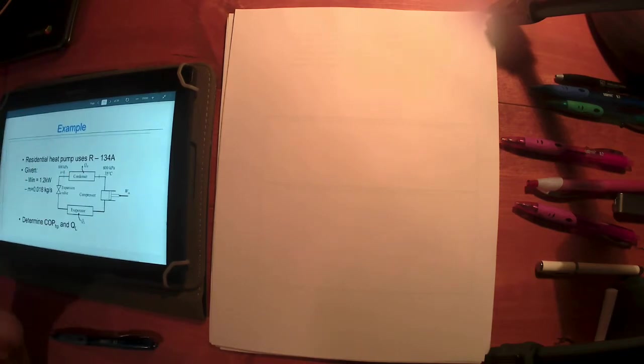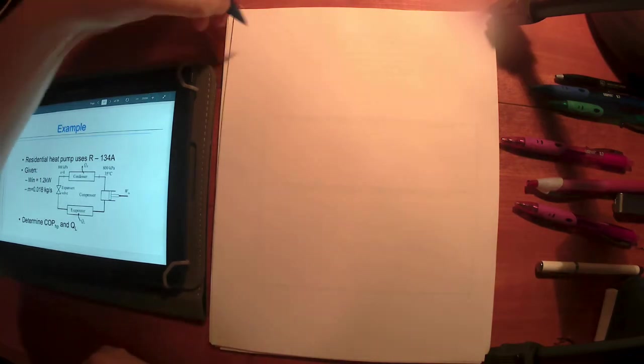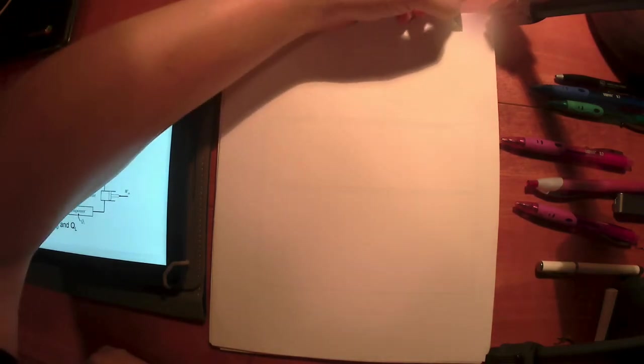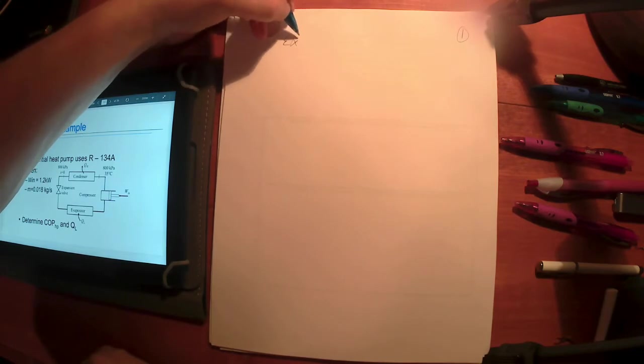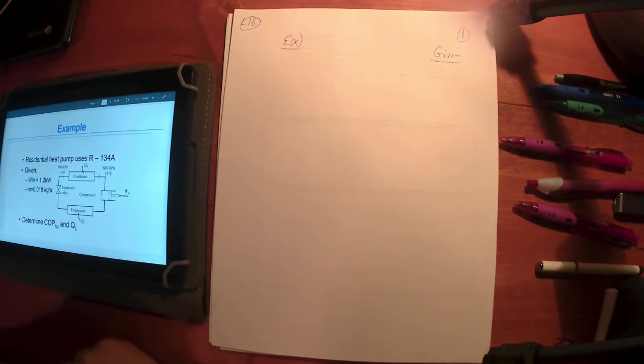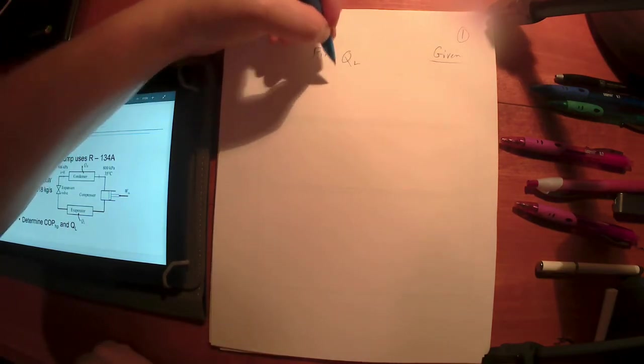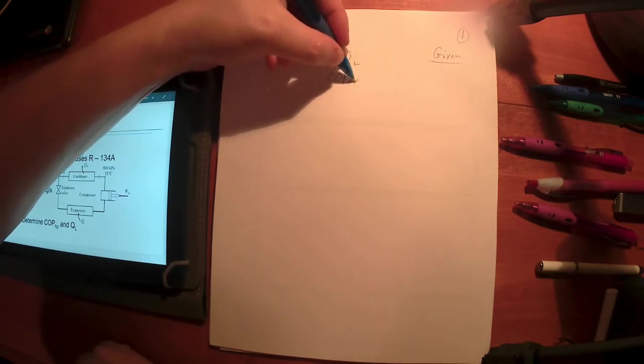Let's look at an example problem. Your refrigerator example problems will look similar to this, and your heat engine problems will work very much the same way. This is lecture 16, we'll do the first page. We're going to start out with an example problem. Let's figure out what do we know and what are they looking for. They want to know: find QL and find COP for the heat pump.